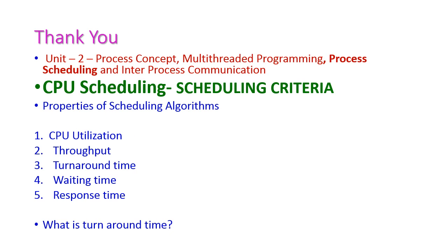Up to this, we have seen the important scheduling criteria for CPU scheduling algorithms, which are used to compare the properties of the scheduling algorithms: CPU utilization, throughput, turnaround time, waiting time, and response time. Now it is question time — students, please write what is turnaround time and give your answer in the comment box. In the next class, we will see what is meant by scheduling algorithm and what are the different scheduling algorithms available in the CPU. Thank you.